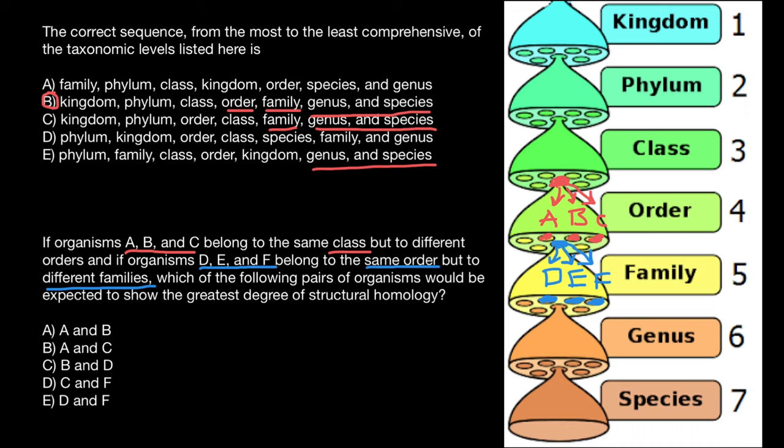So, as you see, the only correct answer here is going to be answer E. This is going to be organisms D and F. They are going to be most homologous among all the rest variants.